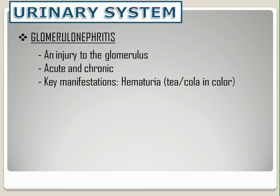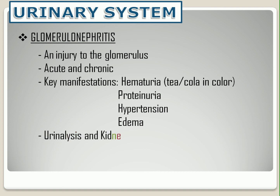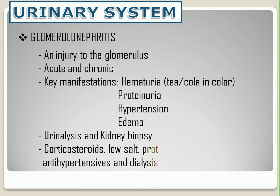Clinical manifestations include hematuria, proteinuria, hypertension, and edema. Diagnostic tests include urinalysis or urine microscopy, but kidney biopsy is the confirmatory test. Management includes corticosteroids prescribed to suppress the immune system, a diet that is low in salt, protein, and potassium, diuretics to reduce swelling, antihypertensive medications, and dialysis if necessary.